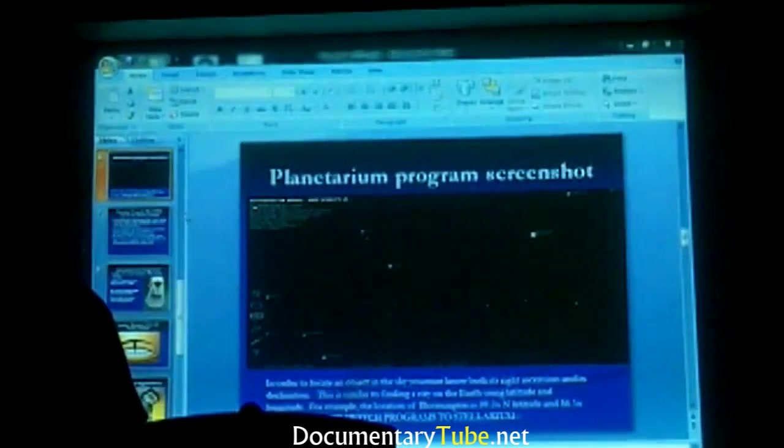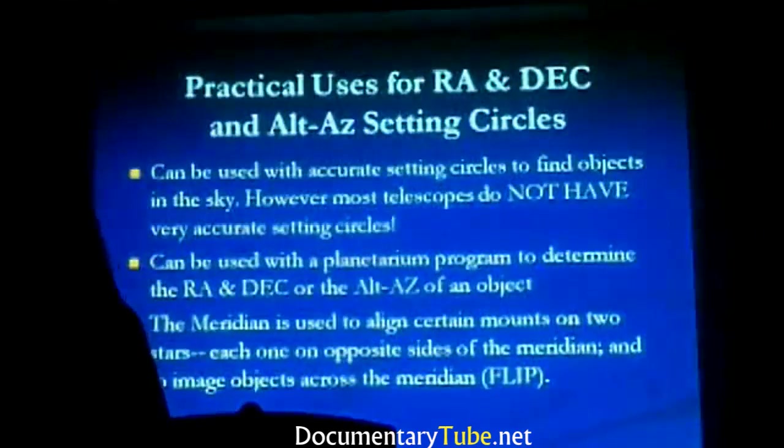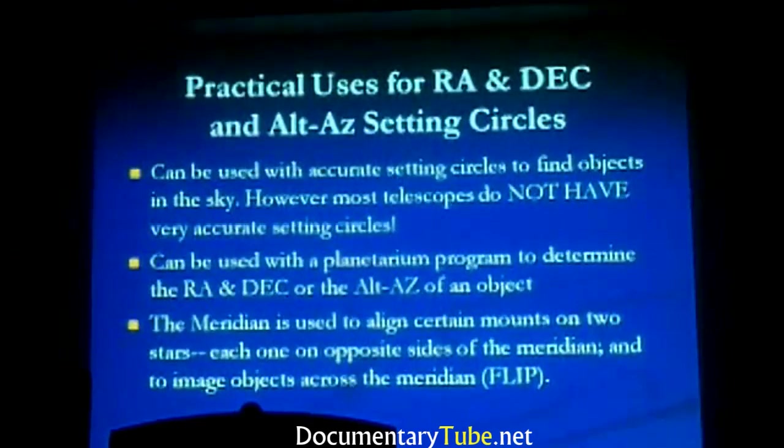Altitude and azimuth coordinates are in some ways less convenient because they're constantly changing and you don't intuitively know where objects will be. They change radically depending on your position on Earth, time of day, and time of night. The equatorial grid moved with the sky — the alt-az grid does not. If you have a device like a cell phone or a palm top computer that gives you moment-by-moment coordinates, you can use the setting circles of your alt-az mount. The advantage is that you don't have to do an alignment like you would with an equatorial mount.